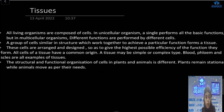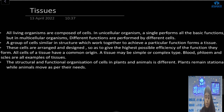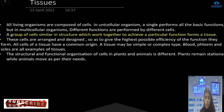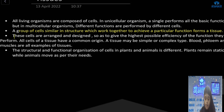The group of cells that are similar in structure and work together to achieve a particular function is called tissues. So a group of cells, similar in structure, that work together to perform a particular function — that is called tissues. Different tissues perform different functions. These cells are arranged and designed so as to give the highest possible efficiency of function they can perform.